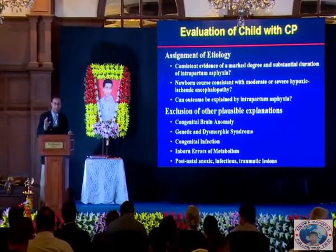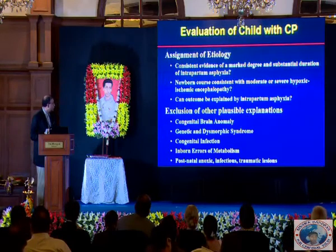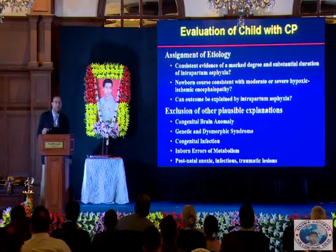If we find the cause, we are satisfied. But we also need to exclude other plausible explanations. For example, a child who has a malformation of the brain or a congenital infection can also give rise to cerebral palsy. Inborn errors of metabolism can give rise to manifestations in early life that look like cerebral palsy. But because these are progressive disorders, they are not static — a metabolic error will continue at age 10, at age 20. So that category is not classified as cerebral palsy.